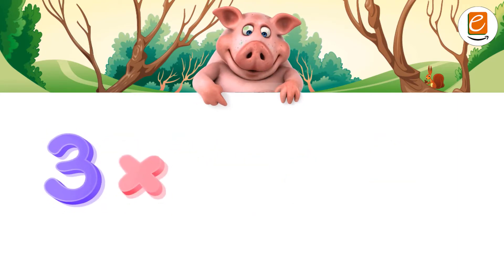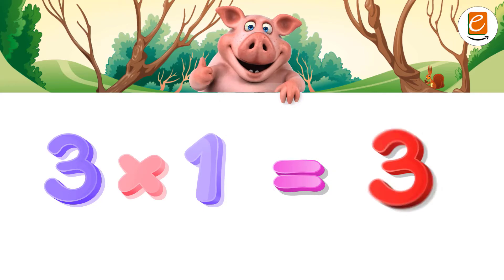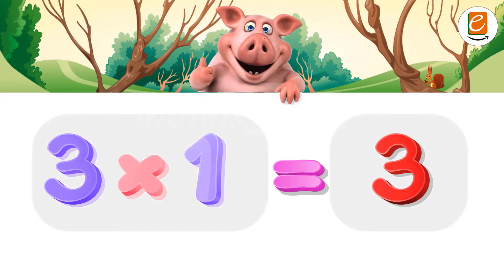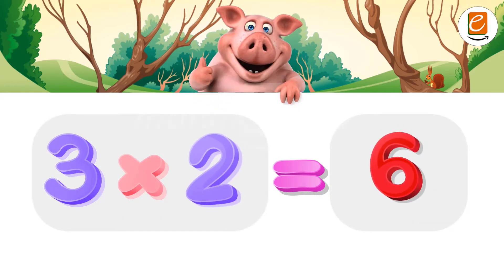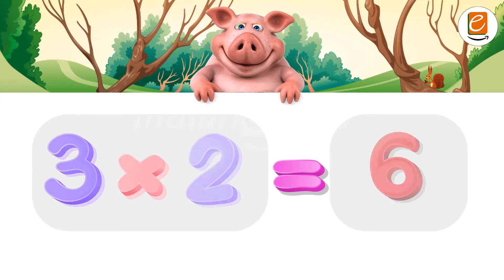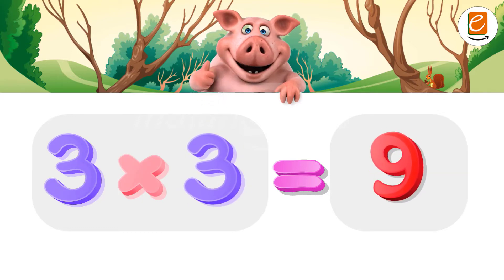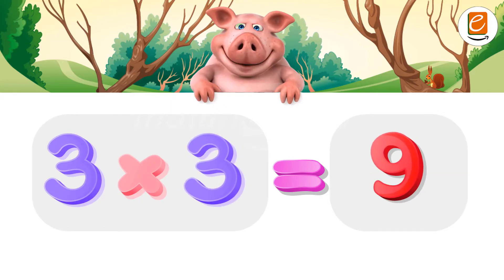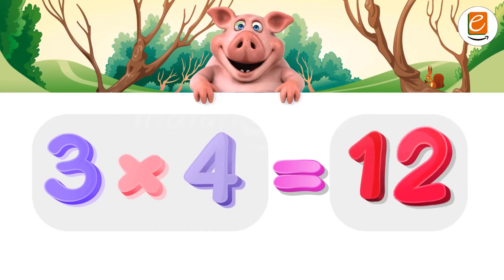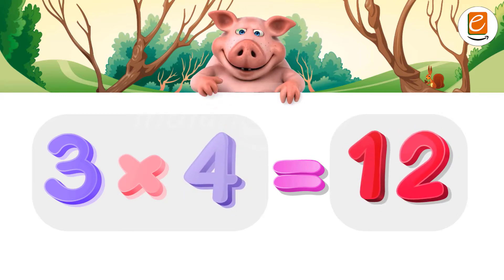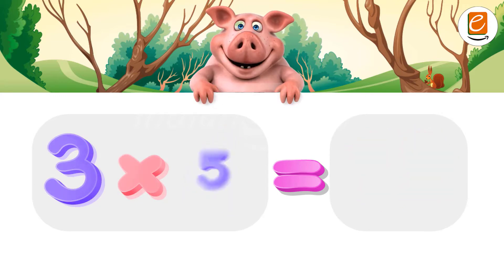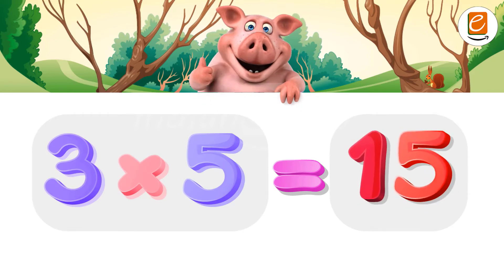Three ones are three. Three twos are six. Three threes are nine. Three fours are twelve. Three fives are fifteen.